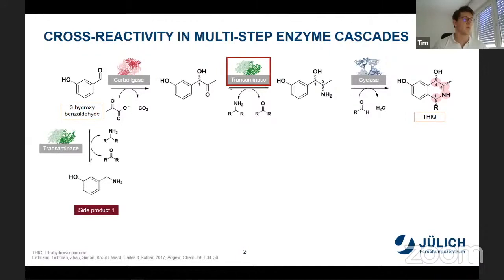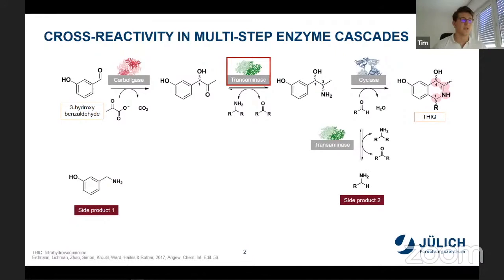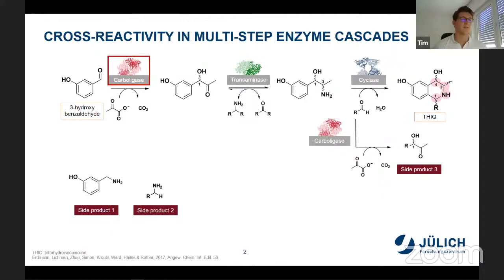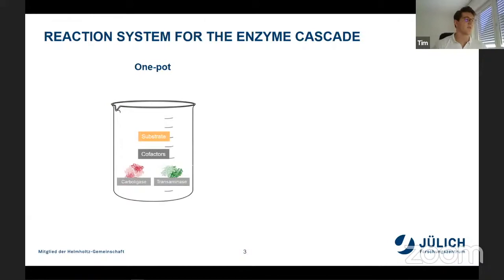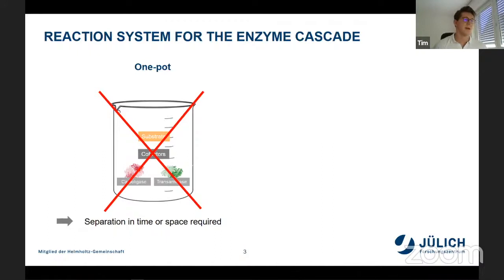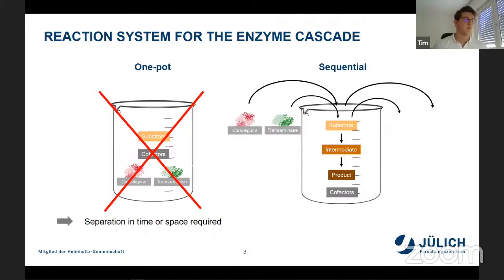The transaminase can convert the starting substrate to a very dominant side product. Further, the transaminase can also convert the aldehyde added for the cyclization step to a second side product. And finally, the carboligase can also act on that aldehyde and form a third side product. With these many side products produced, a one-pot production is quite unfeasible, and the reaction steps have to be separated in time or space. A sequential approach requires enzymes to be added then removed to avoid cross-reactivity, which is quite elaborate.